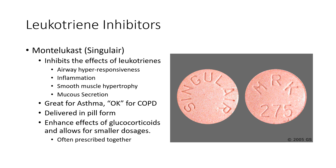Leukotriene inhibitors might be given for patients with asthma — these are a slam dunk for asthma. As we talked about in pathophysiology, leukotrienes are the mediator for a lot of the early hyper-responsiveness and inflammation that occurs in asthma. So if we block the effects of those leukotrienes, we decrease secretions, decrease smooth muscle hypertrophy, decrease bronchoconstriction, and vasodilation from the inflammation. They're really great for clearing mucus and keeping the airways open, decreasing congestion in patients with asthma.